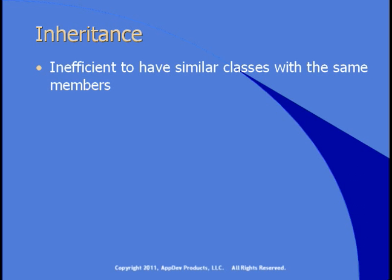Your other option would be to add into your one customer class all the properties needed by corporate customers and all the properties needed by individual customers — do the same with methods. Well, now you have a class with properties that aren't used. If you create a corporate customer instance, the birthday and first/last name properties aren't used. If you create an individual customer instance, the customer name property isn't used. So both options — duplicated code or unused code — are inefficient.